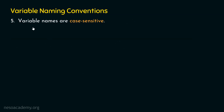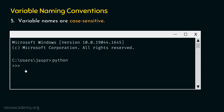Let's move to rule number five: variable names are case sensitive. For example, if we type X = 10 and then x = 10 using a small letter, we will not get any error, but these two variables are different — they are not the same. Capital X is not the same as small x. Uppercase X is not the same as lowercase x. Variable names are case sensitive in Python, so these two variables are different.